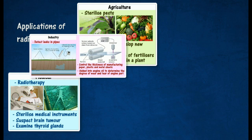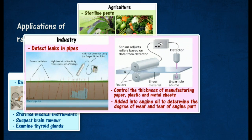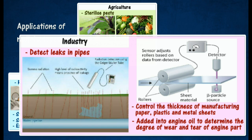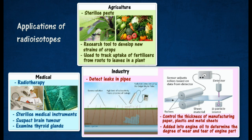In industry, radioisotopes can be used to detect leaks in pipes. In manufacturing paper, plastic, and metal sheets, the thickness can be controlled automatically using radioactive sources. Radioisotopes are also added into engine oil to determine the degree of wear and tear of engine parts.